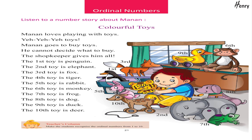The first toy is a penguin, the second toy is an elephant, the third toy is a fox, the fourth toy is a tiger, the fifth toy is a rabbit, the sixth toy is a monkey, the seventh toy is a frog, the eighth toy is a dog, the ninth toy is a duck, the tenth toy is a deer.